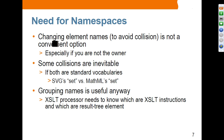If you are not using namespaces, one way you can avoid collision is by changing element names, but this is not a convenient option, especially if you are not the owner of that element. Some collisions are inevitable because they are defined by standard bodies. For example, SVG is a standard and MathML is a standard, and both standards define a set element. So if you are using SVG set and MathML set in the same XML document, there is no way to avoid name collision.